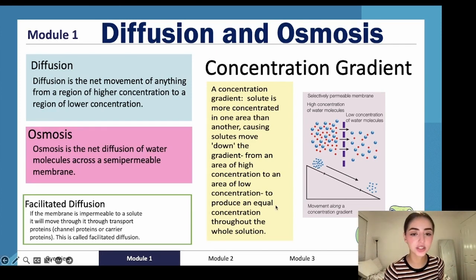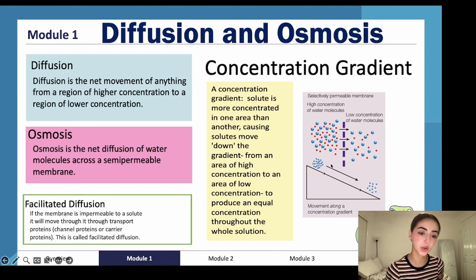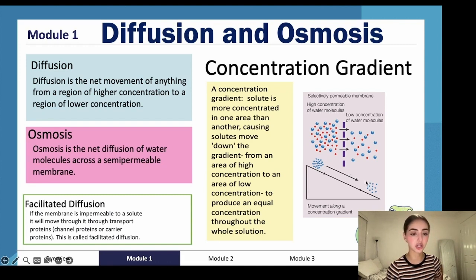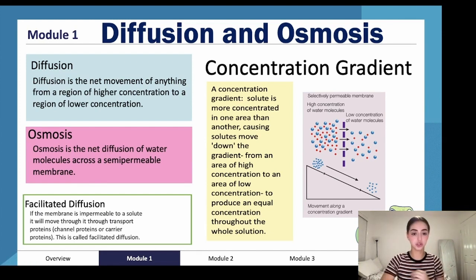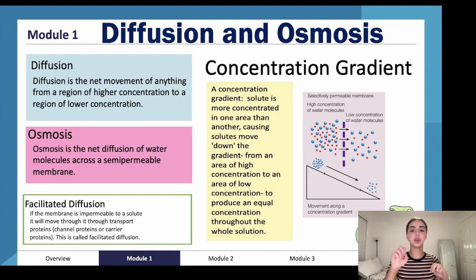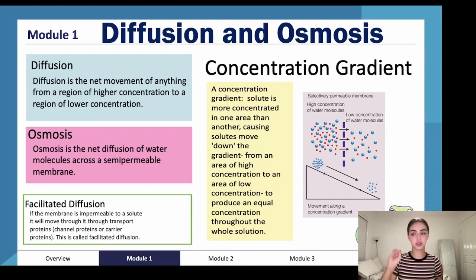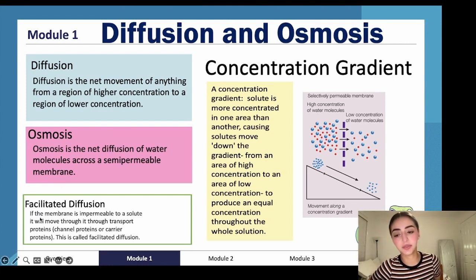What is the concentration gradient? If the solute is concentrated in one area more than another, it causes the solute to move down the concentration gradient — from an area of high concentration to an area of low concentration — so that it can produce an equal concentration throughout the whole solution. For example, when you put salt in water, it diffuses and tries to reach an equal concentration of salt throughout the water, not just in one place.